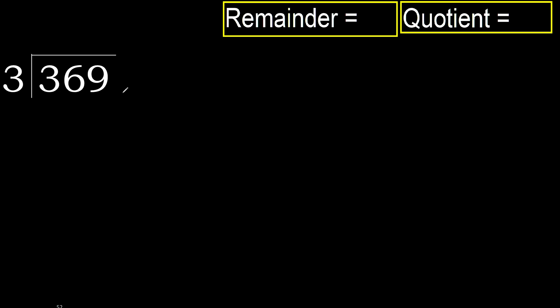369 divided by 3. 3 is not less, therefore start with 3. 3 multiplied by which number is nearest to 3 but not greater? 3 multiplied by 2 is 6 — it's greater. Multiply by 1: 3 is not greater. So the first quotient digit is 1.